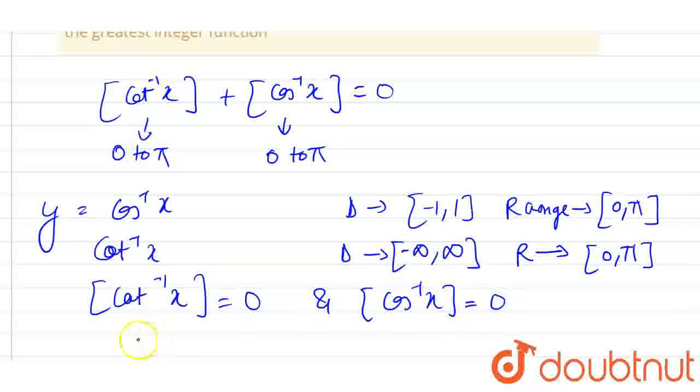It means that x belongs to cos inverse between this range, and here x belongs to cot 1 to infinity. There are no such common values.